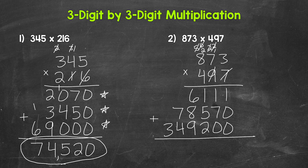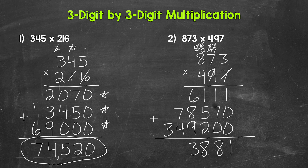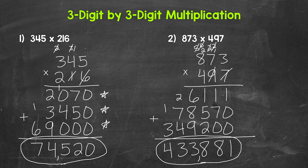Now we can add. Starting with the ones place: one plus zero plus zero is one. Then one plus seven plus zero is eight. Next, one plus five plus two is eight. Then six plus eight is 14, plus nine is 23. Carry the two. Then two plus seven plus four is 13. Carry the one. And then one plus three is four. So we end up with 433,881.